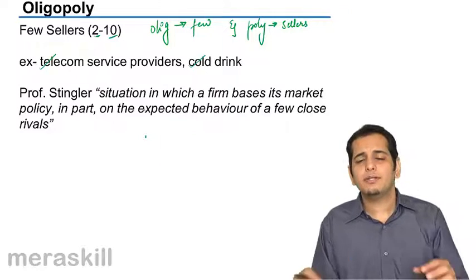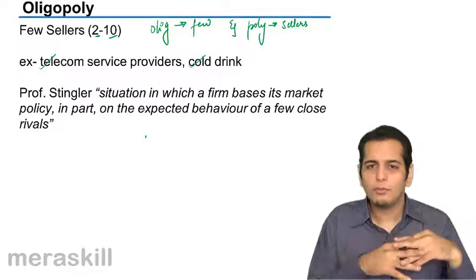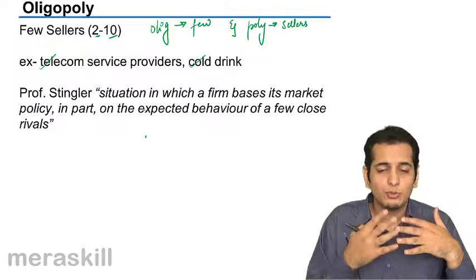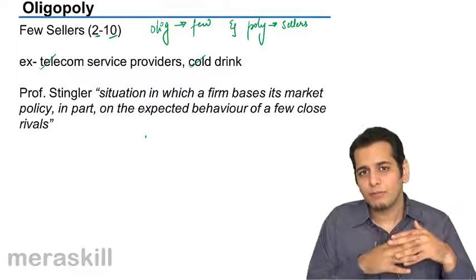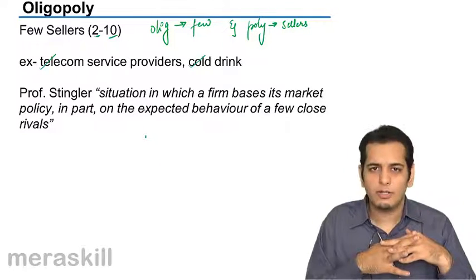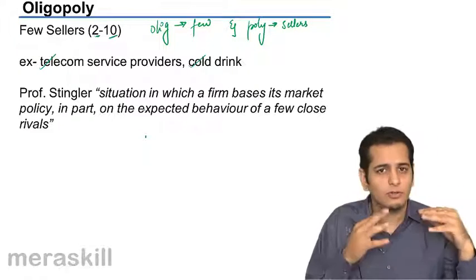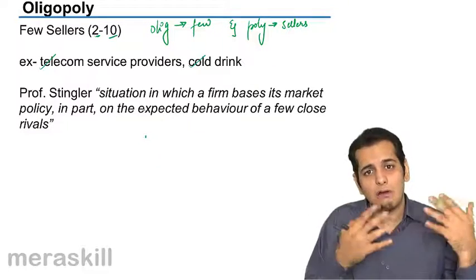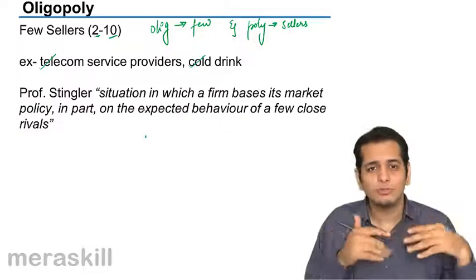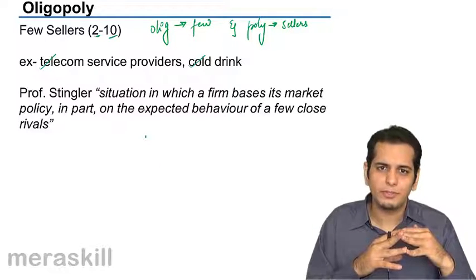That means there is no hard and fast method, no thumb rule that operates in the oligopolistic market. You always have to be on your toes to change the policies of the firm. If the competitor brings some change in his product, you have to bring change in your products as well. If the competitor reduces the price, you will have to reduce the price too. If the competitor gives some extra after-sale service, guarantee, or warranty, you will have to do the same. You keep adapting depending on the policies of the competitors or rivals.